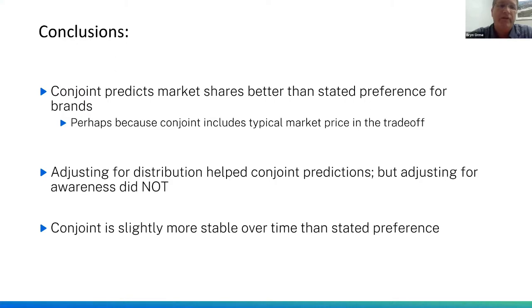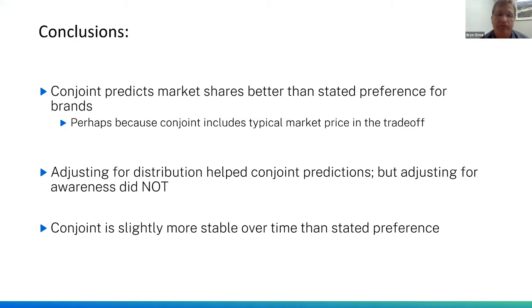They also looked at whether conjoint predictions could be improved. For the 200 respondents per wave, they tested whether adjusting the market simulator for distribution and awareness differences would help. They found that adjusting for distribution helped conjoint predictions, but adjusting for awareness did not for their data sets. Furthermore, the conjoint predictions of brand preference were slightly more stable over time than the stated preference results from 200 respondents per wave.